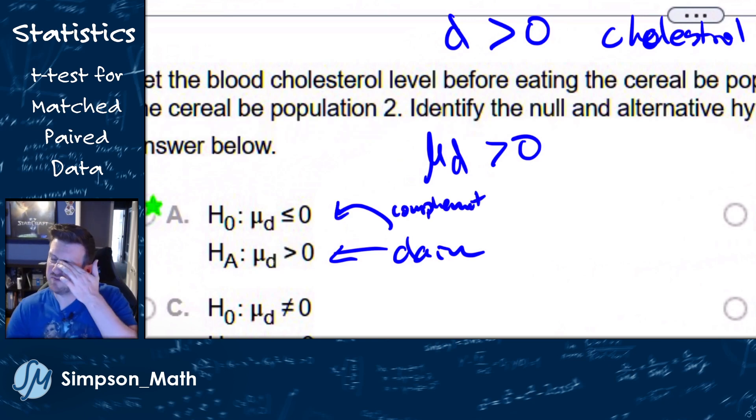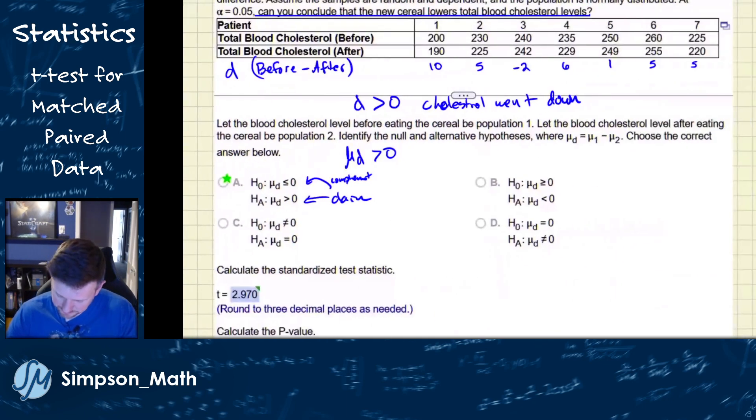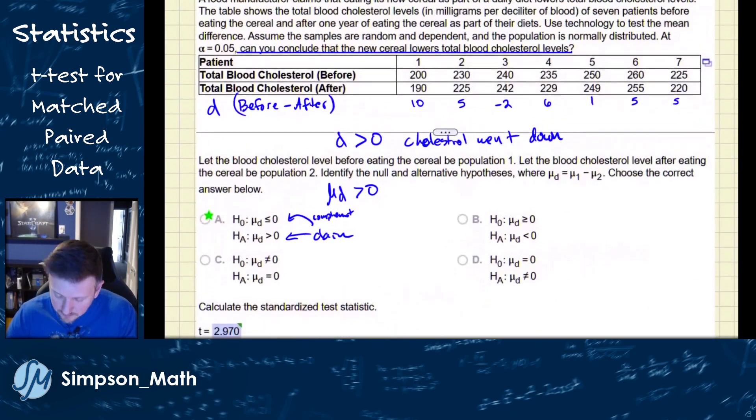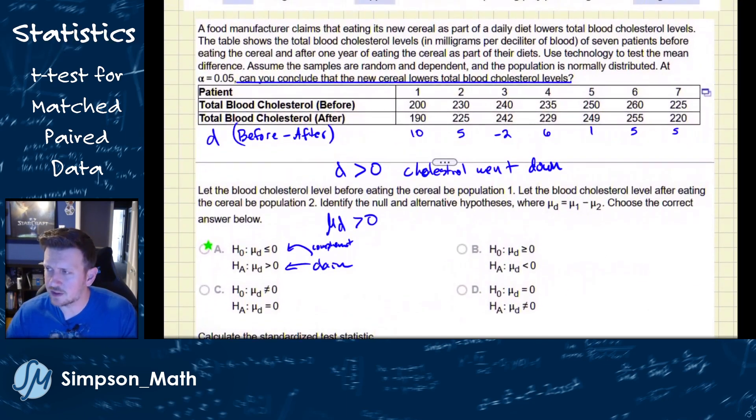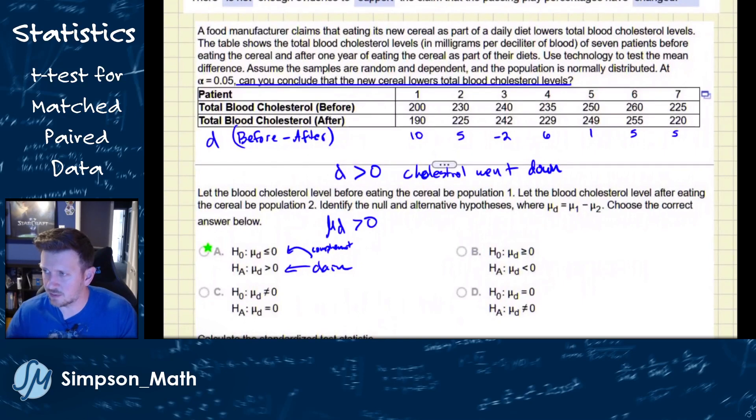So the claim is that the cereal lowers cholesterol — meaning D (before minus after) is greater than zero on average. The alternative hypothesis is H_a: mu_D > 0, and the null is H_0: mu_D ≤ 0. This is a right-tailed test, even though it feels counterintuitive because the book had us subtract in the before-minus-after direction.